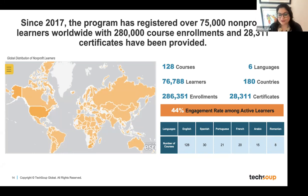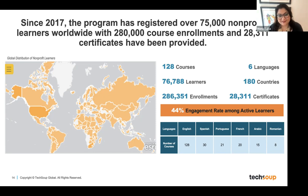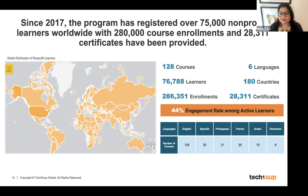One thing to point out is our engagement rates. Engagement rate is basically, out of active learners, how well they engage with the content. Our engagement rates are over 40%. In the online learning space, these are typically single-digit numbers less than 10%. For us, being at 44% engagement rate is phenomenal. We're really proud of that, and it's because of the attention and time we give to the actual design of our instruction.